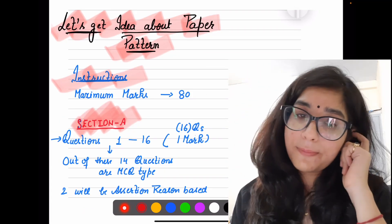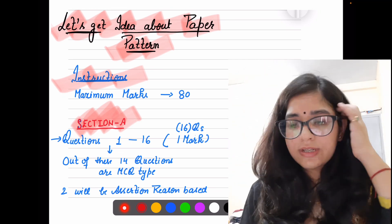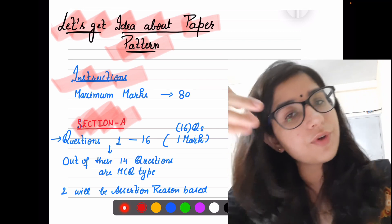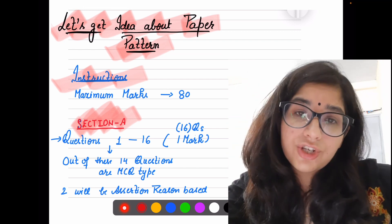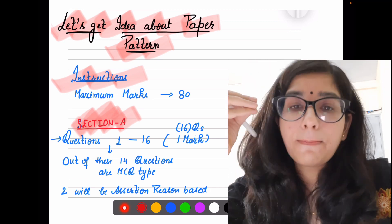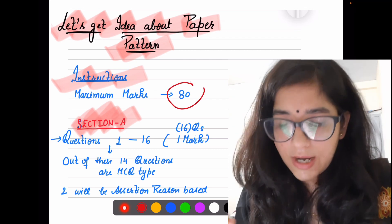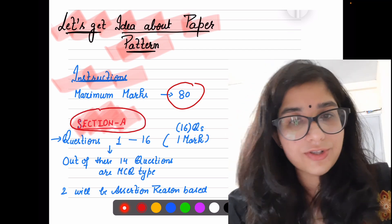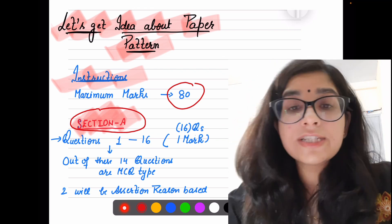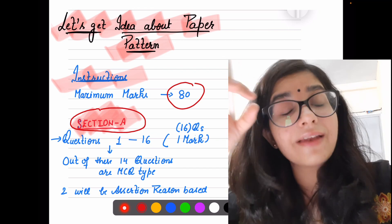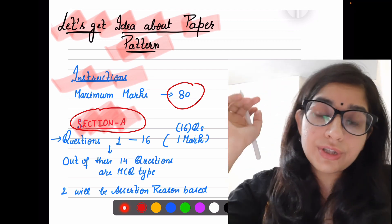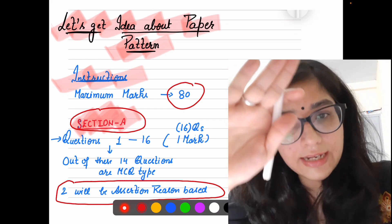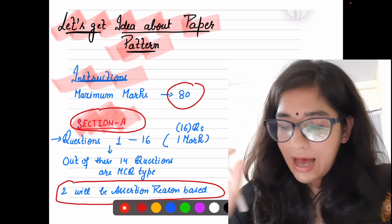Now comes the paper pattern. According to the latest information, the paper will be of maximum 80 marks. There will be 4 sections. Section A has 16 questions all of 1 mark — 14 are MCQs and 2 are Assertion-Reason based. Section B has questions 17 to 26 — 10 questions of 3 marks each, from Physics, Chemistry, and Biology.